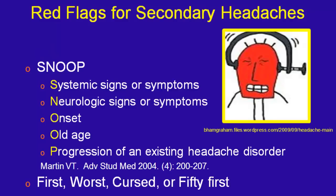The red flags for secondary headaches: I always use the 'first, worst, cursed, and fifty-first' method. First — it's the first headache of a person's life. Worst — it's the worst headache of their life. Cursed — something abnormal about it, like a weak arm, weak leg, slurred speech, or difficulty speaking. And fifty-first — a person does not typically present with new migraine or tension headaches over the age of fifty, so if they're presenting over fifty, you better think about something else.